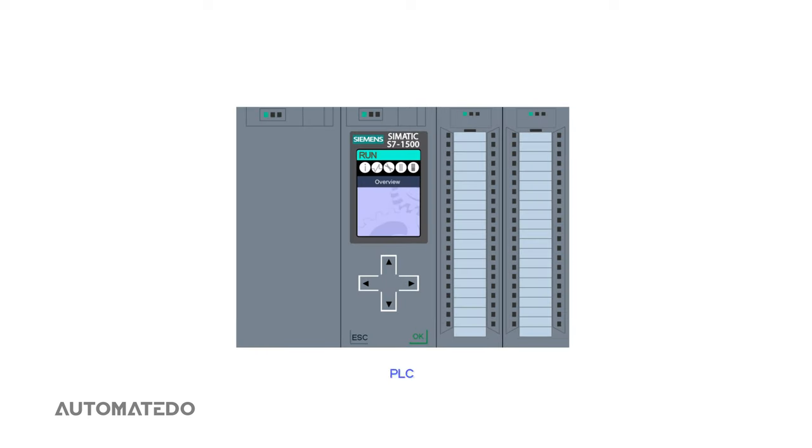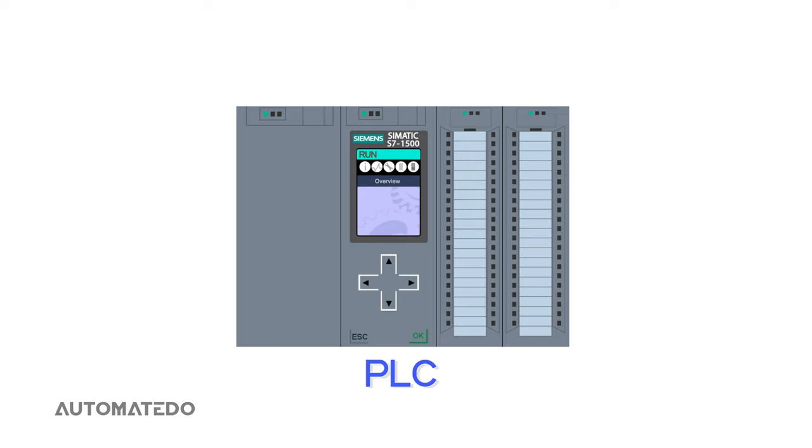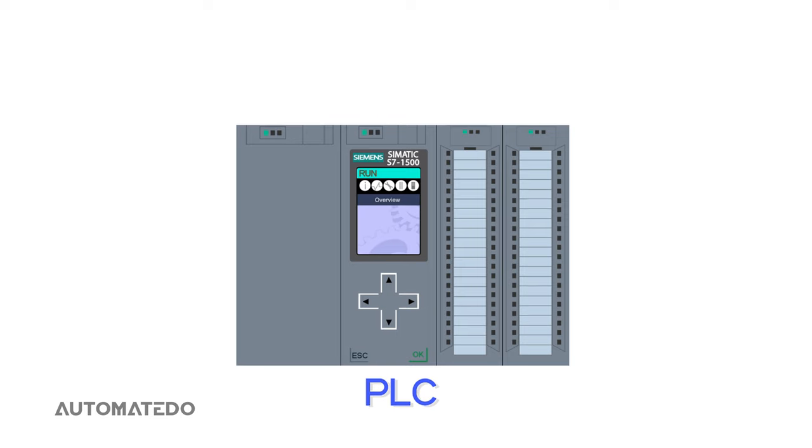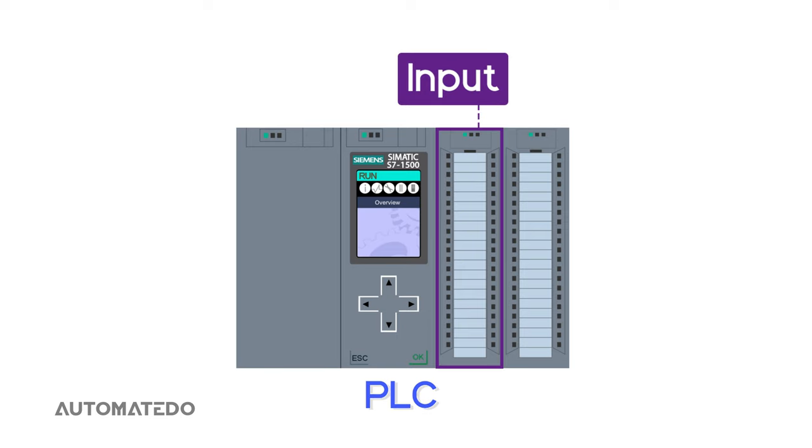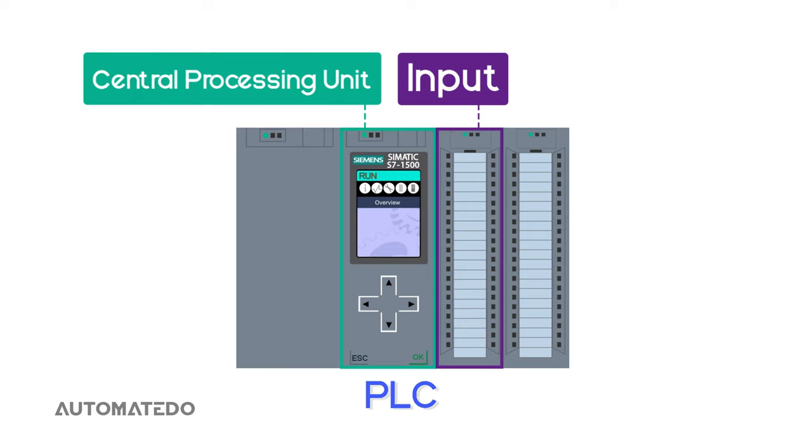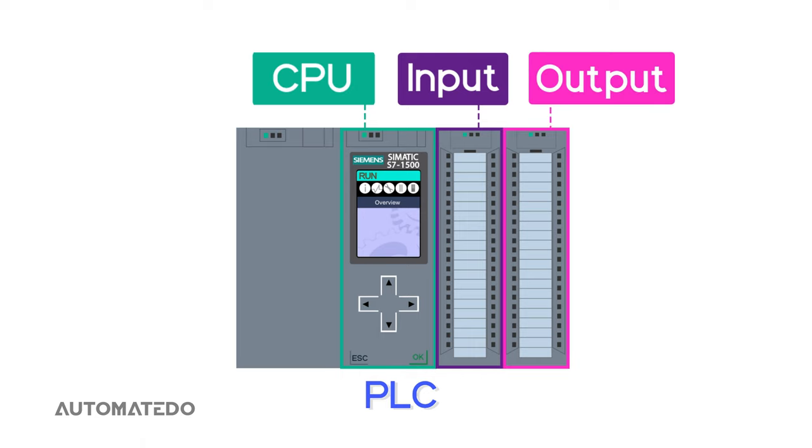Let's dig a little bit into the PLC and see how it operates. The functions of a simple PLC can be divided into three categories. One, input. Two, central processing unit, or CPU. And three, output.